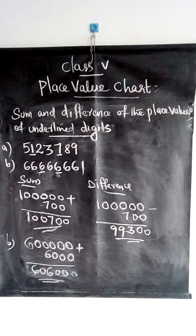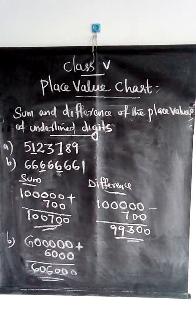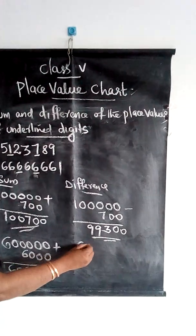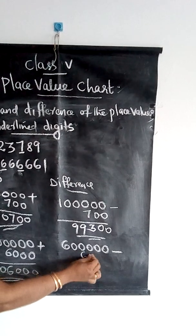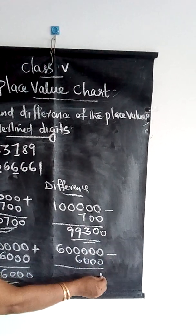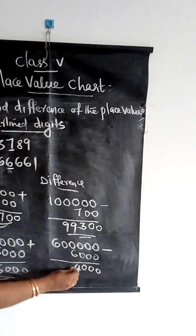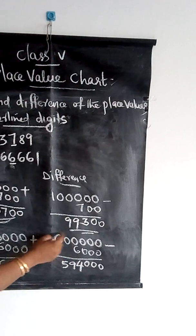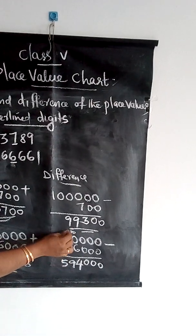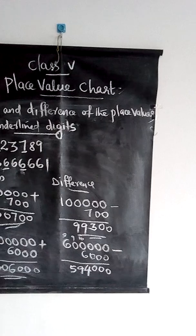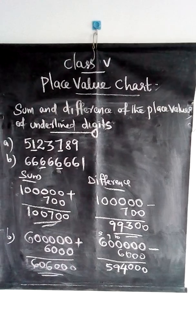Then we add: 6 lakh plus 6,000. That gives the sum of the place values of the underlined digits. In the same way, we can subtract also: 6 lakh minus 6,000. Borrowing values as you studied in the lower classes, you can find the result. This is how we find the sum and the difference of the place values of underlined digits.